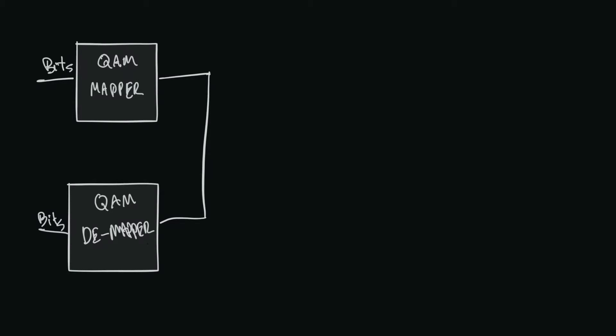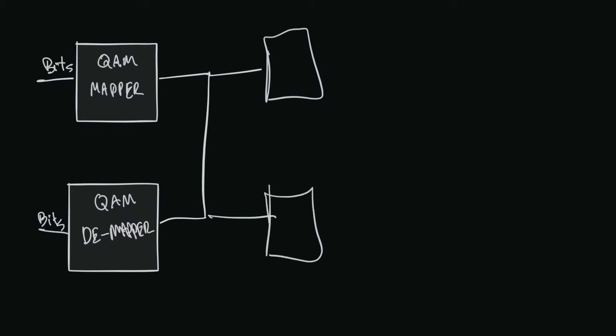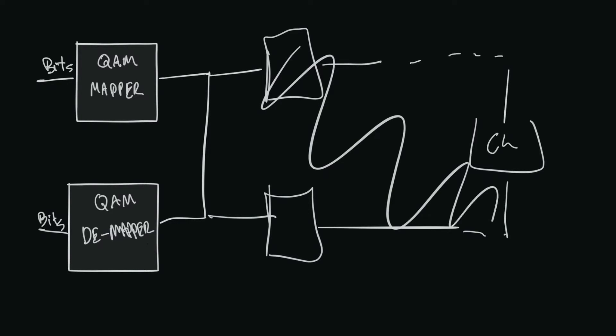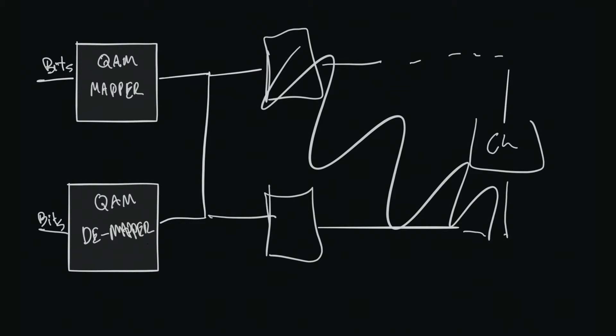In the future our transceivers are going to have many more blocks like pulse shaping and matched filter, and many others all the way to the channel. But for now we don't want to investigate those blocks yet — we want to concentrate on this part here. All we're going to do is convert bits to symbols and then from symbols back to bits. So now we are ready to start coding our actual transceivers.